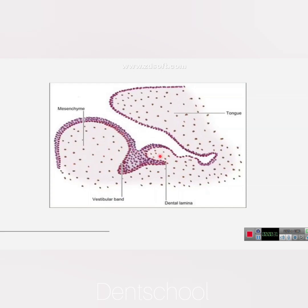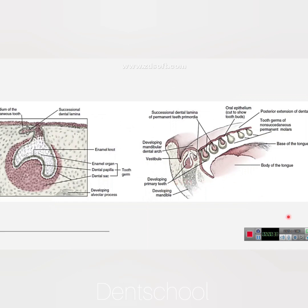Now, the dental lamina serves as a primordium for the ectodermal portion of the deciduous teeth. Here we have the dental lamina, that is, the developing tooth buds.